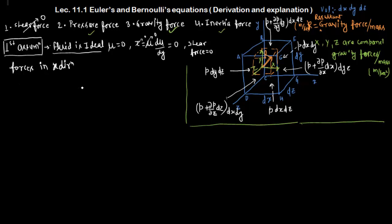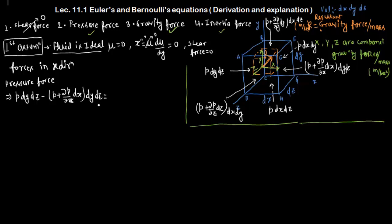Considering forces in the x-direction: the pressure force p·dy·dz acts in the positive x-direction, and (p + ∂p/∂x·dx)·dy·dz acts in the negative x-direction. The net pressure force in the x-direction is therefore −(∂p/∂x)·dx·dy·dz.